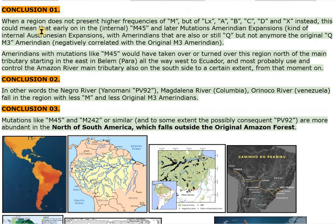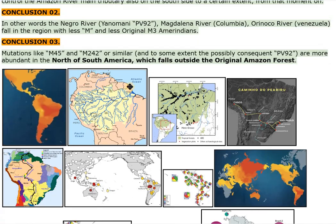Amerindians with mutations like M45 would have taken over or turned over this region north of the main tributary starting in the east in Belém, Pará, all the way west to Ecuador, and most probably used and controlled the Amazon River main tributary also on the south side to a certain extent from that moment on. Conclusion 02: In other words, the Negro River, Yanomami, PV92, Magdalena River, Colombia, Orinoco River, Venezuela, fall in the region with less M and less original M3 Amerindians.